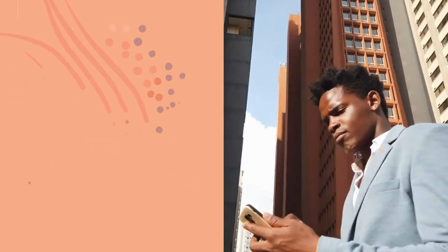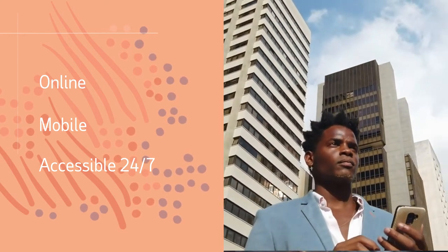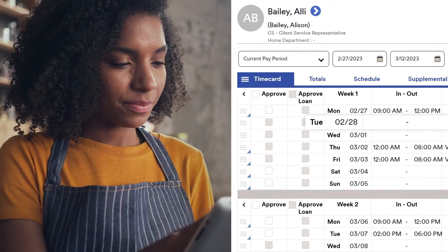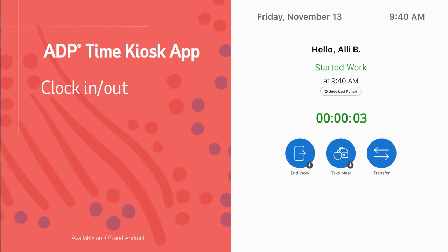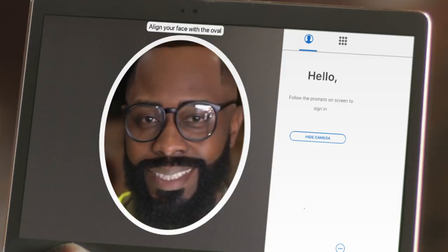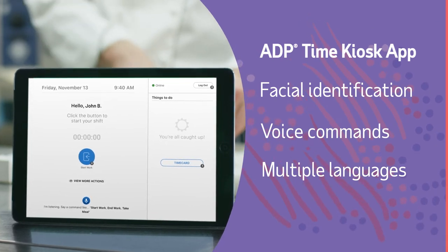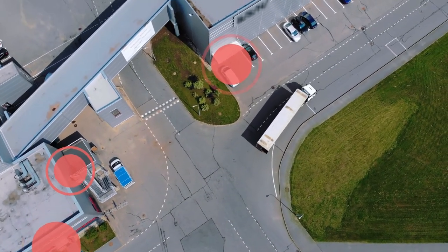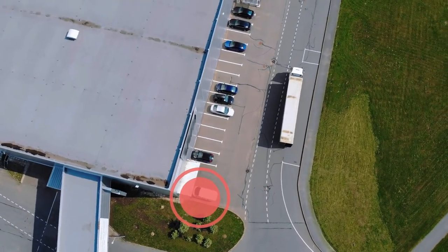ADP Essential Time means your time collection is online and mobile, accessible from anywhere, 24 hours a day. With the affordable time kiosk app, you can instantly turn a tablet or smartphone into a shared time clock. Using it, workers can start and end shifts, register meal breaks, transfer jobs, and retract punches. Built-in conveniences like facial identification and voice commands in multiple languages allow for a touchless user experience. It even enables geofencing — supervisors can designate on-site boundaries for punches, ensuring employees register start and end times appropriately.